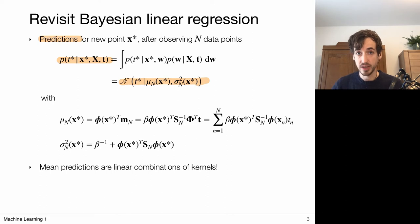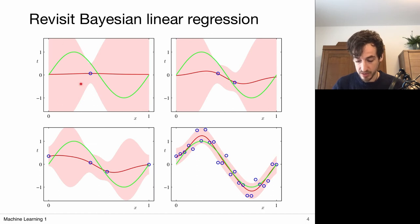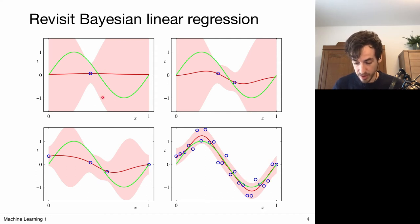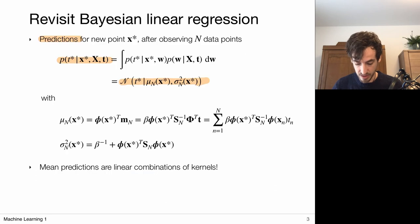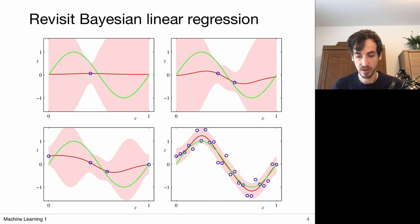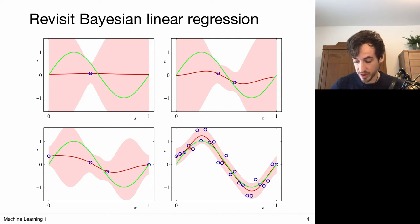After obtaining these predictive distributions, which no longer explicitly depend on w, we have models like this. Suppose we have only one data point: the predictive distribution says that for new values of x*, we can sample the mean and expect a prediction at a certain location, but there is high uncertainty reflected in the sigma-squared term, which depends on x*. As we add more data points, the model improves: the predictive mean (the red curve) becomes closer to the true model, and the variance at each fixed prediction becomes smaller.